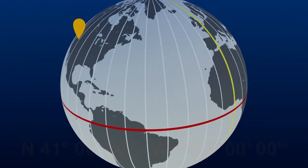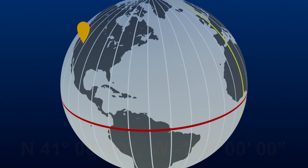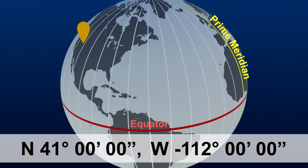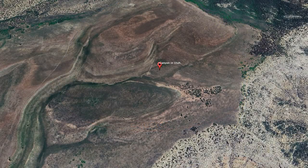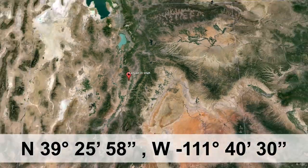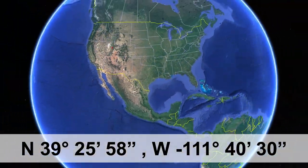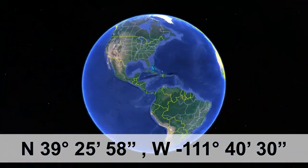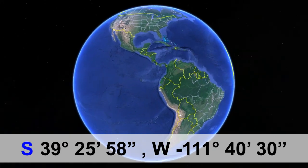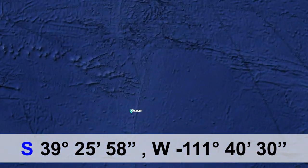So how do we give our location using latitude and longitude? We measure away from set reference points on the globe. The position of any location on Earth can be given in coordinates, with the latitude shown first and the longitude shown second. Let's say you are in a canyon in Utah. Your coordinates are 39 degrees, 25 minutes, 58 seconds north of the equator, and 111 degrees, 40 minutes, 30 seconds west of the prime meridian. If you accidentally switch the direction—say from north to south—you would end up in the ocean off the coast of South America.